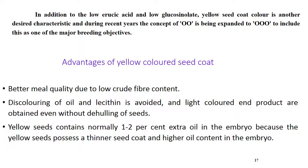In addition to low erucic acid and low glucosinolate, yellow seed coat color is another desirable characteristic, and the concept of 00 is being expanded to 000 to include this as a major breeding objective. Advantages of yellow colored seed coat include better meal quality due to low crude fiber content. Discoloring of oil and lecithin is avoided and light colored end products are obtained even without dehulling. Yellow seeds contain normally 1 to 2% extra oil in the embryo because they possess a thinner seed coat and higher oil content in the embryo.